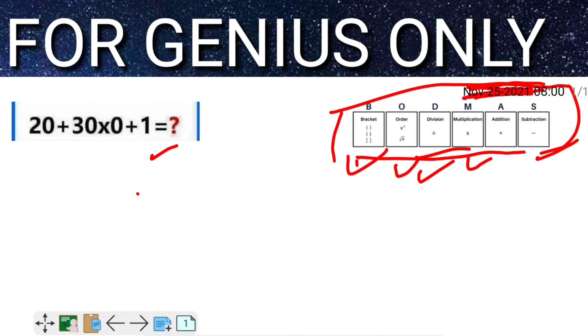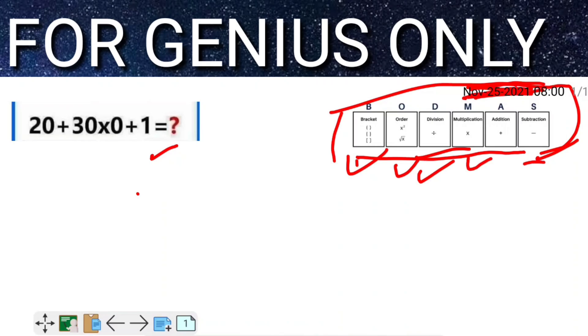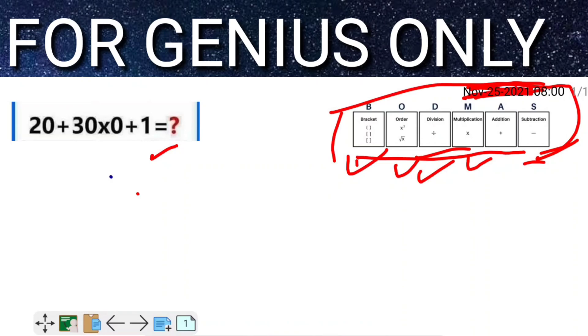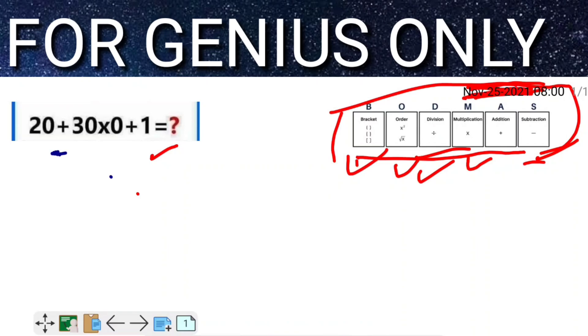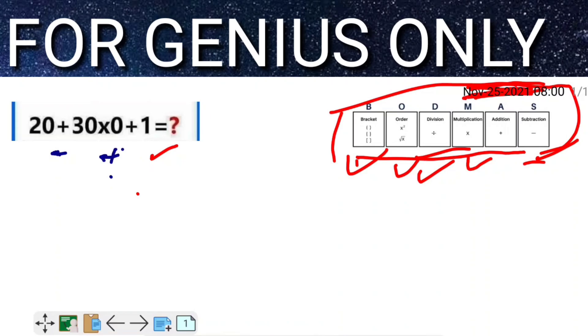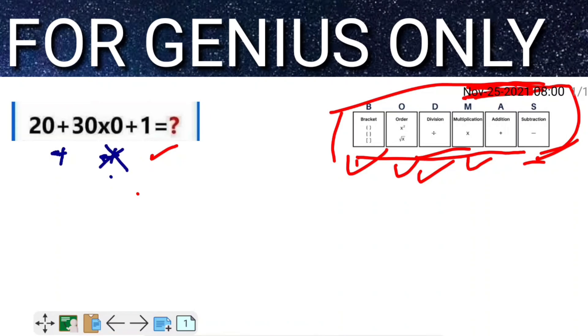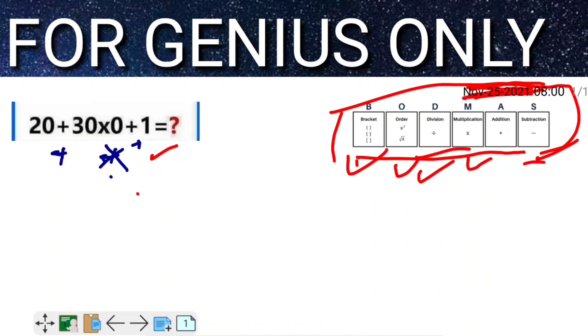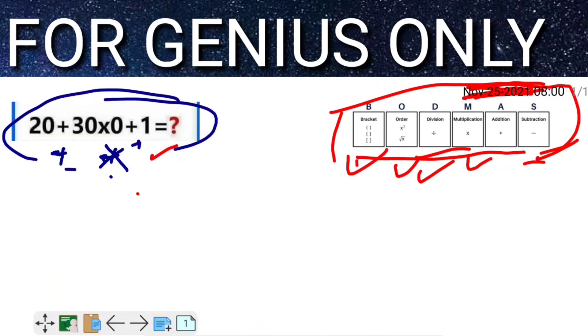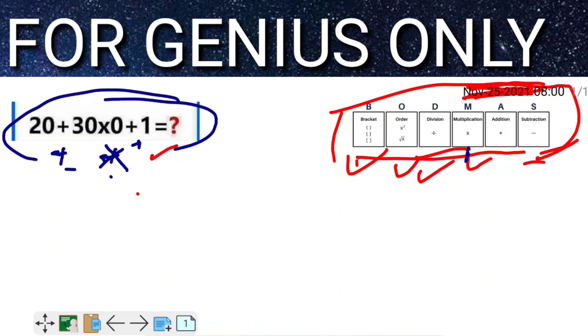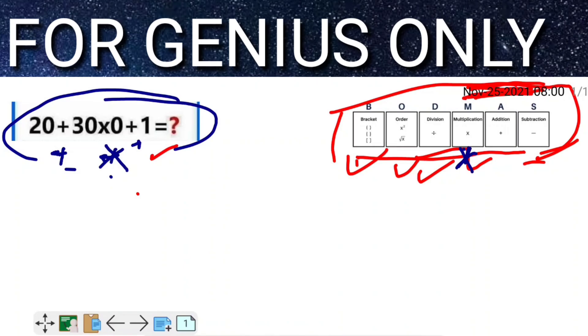After that, addition, and last is subtraction. In this equation, the signs available are addition and multiplication. We have to do multiplication first because according to BODMAS, multiplication comes before addition.